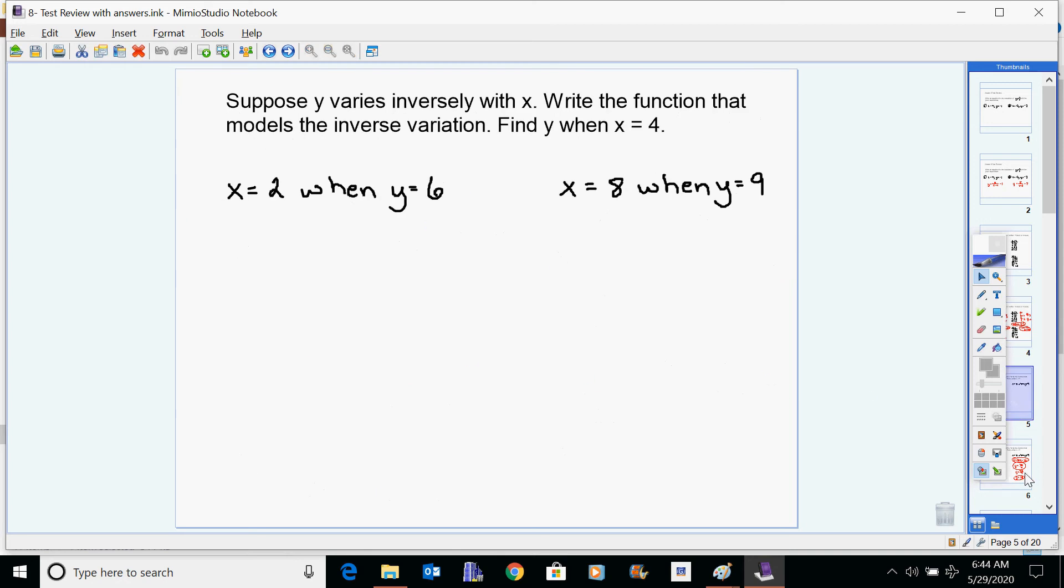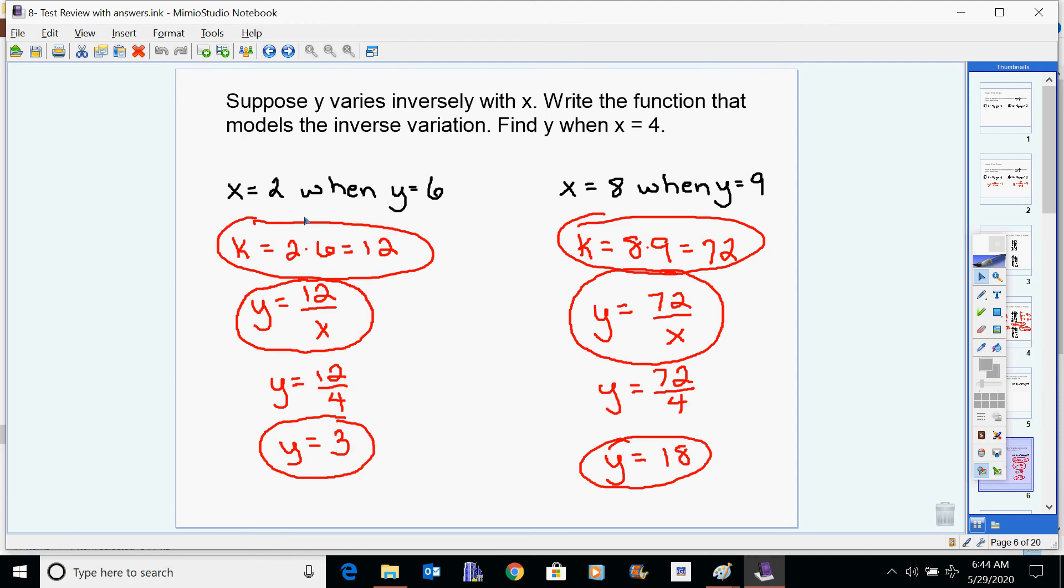If you're given a problem where y varies inversely with x, it means that the x times the y has to give you the same value over and over again. So that's why you can find the constant simply by multiplying the two numbers that go together, and that gives you your constant of variation. Your equation, though, for an inverse variation is y equals k over x. So it's y equals that number over x. That's your equation. Here is your equation, y equals that number that you got over x. Then when you need to find y when x equals four, you just plug in the four for your x and simplify and get your answer three and your answer 18 on that.